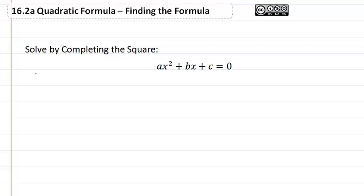So the first thing we're going to do is we're going to solve by completing the square a typical trinomial. We're going to subtract our number from both sides.